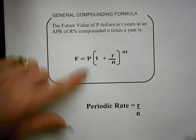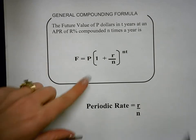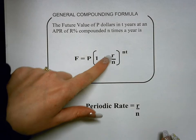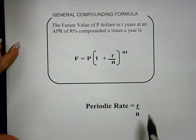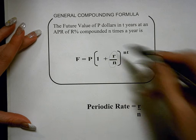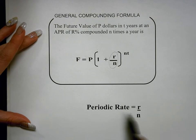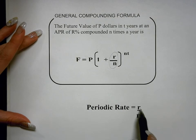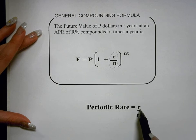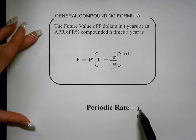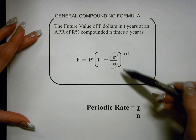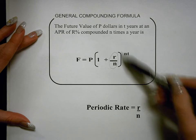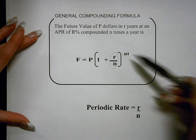F equals P multiplied by the quantity 1 plus R divided by N. R divided by N is called the periodic rate. The periodic rate is found by the rate divided by N. Lowercase R means that is the percentage in the form of a decimal. So you put the percentage in the form of a decimal divided by N, multiplied by the quantity N times T.